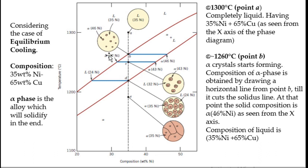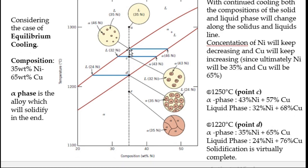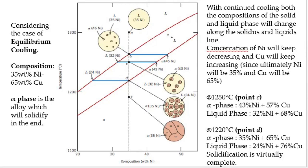The horizontal line at point B crosses the liquidus at point B itself, so the liquid composition is 35% nickel and 65% copper. With further cooling from B to C, the alpha crystals grow in size. From point C, the solid composition is 43% nickel and 57% copper.